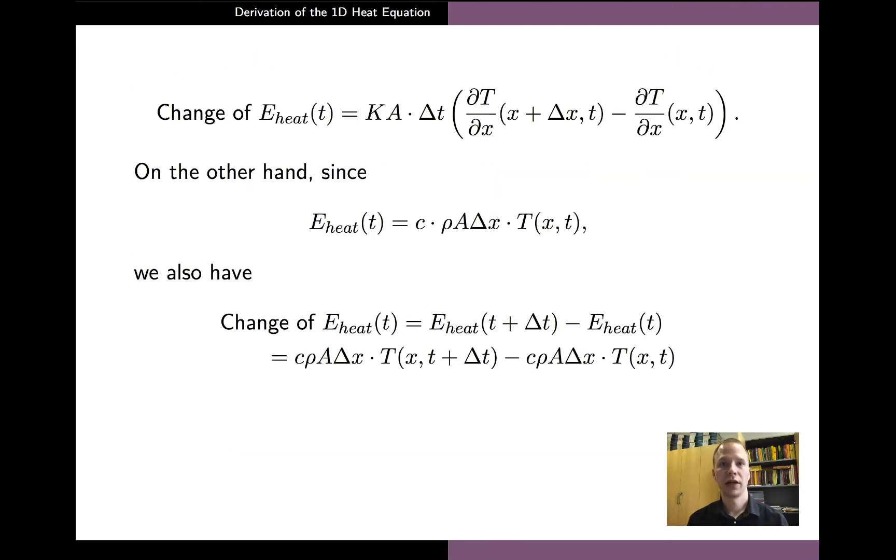On the other hand, since we also have an explicit expression for the heat energy of the slice at time t, given here, the change of the heat energy is also simply given by the difference of the energy at time t plus delta t and at time t. And this way we can derive another alternative expression for the change of the energy of the heat in the slice of the rod.